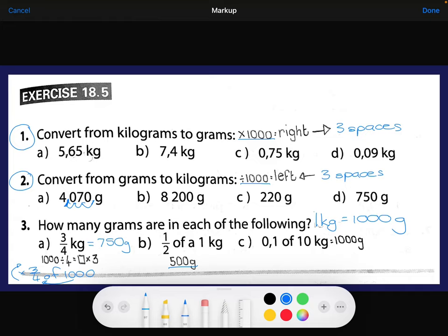Half of a kilogram, well half of a thousand is 500, as you can see there. That's an easy one. And then 0.1 of 10 kilograms. Now let's just rewrite this a little bit.